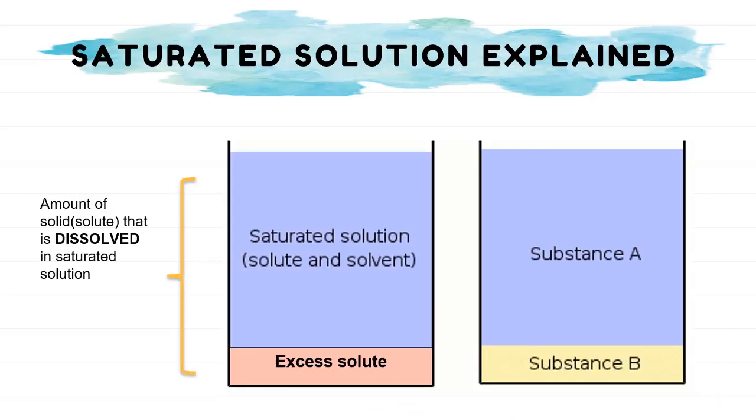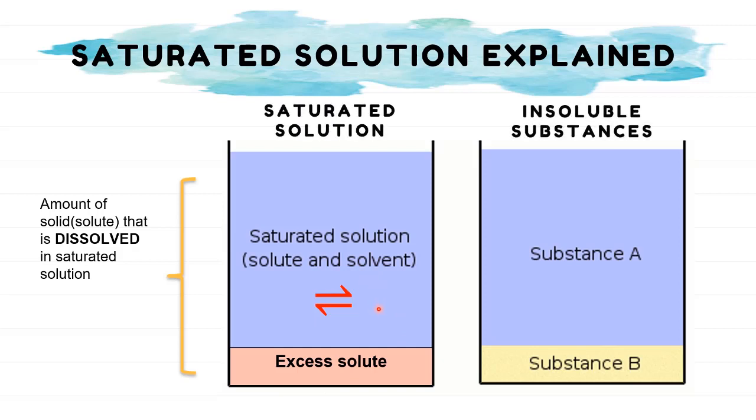Let's look at illustrations below to help you differentiate between saturated solutions and insoluble substances. When equilibrium is established between the solute and solvent, where the amount of dissolved, the purple area, and the undissolved solute, the pink area, are in equilibrium, the solution is said to be saturated. Whereas in insoluble substances, the amount of dissolved and undissolved solutes are not in equilibrium with one another.